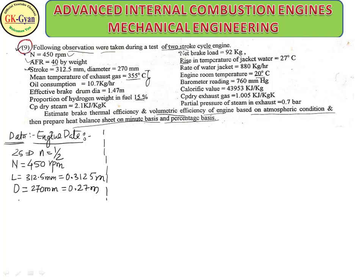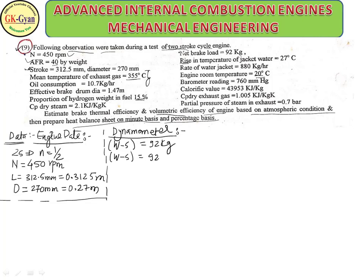Now the dynamometer data. Net brake load (W minus S) is given as 92 kg, but you have to convert it to Newtons: W minus S = 92 × 9.81 N. Effective brake drum diameter (dB + dR) = 1.47 m.